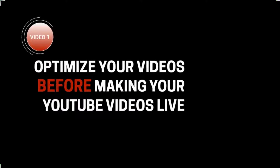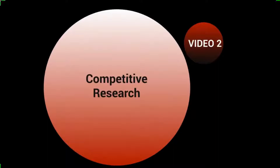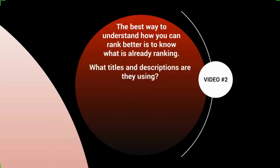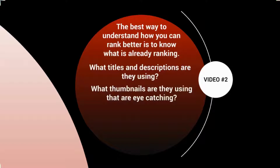Let's talk about competitive research. The best way to understand how you can rank better is to know what is already ranking in your niche or market. What we want to do is analyze the top-ranking videos — specifically look at what titles and descriptions they're using, what thumbnails are eye-catching, and what the user experience is like when you click through those videos.